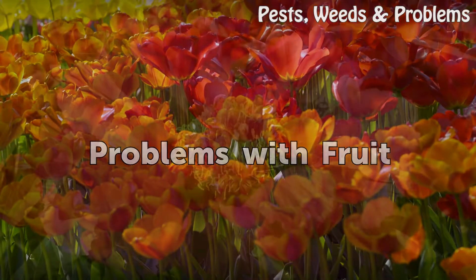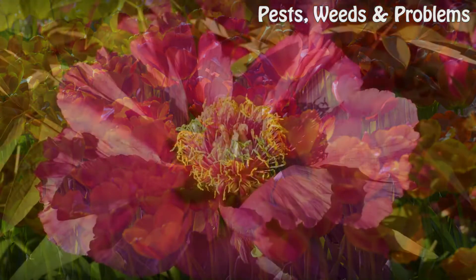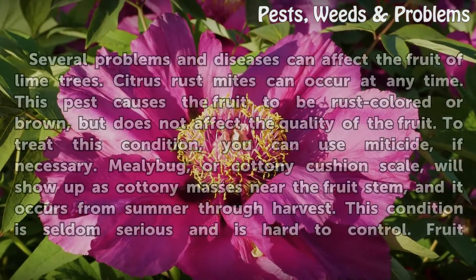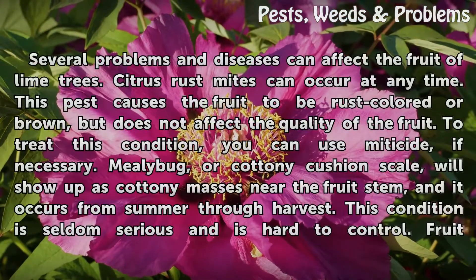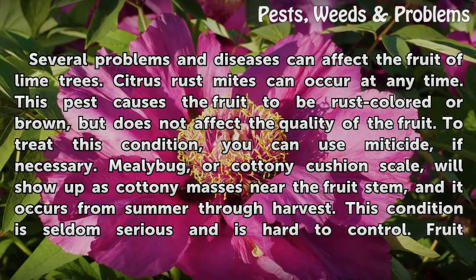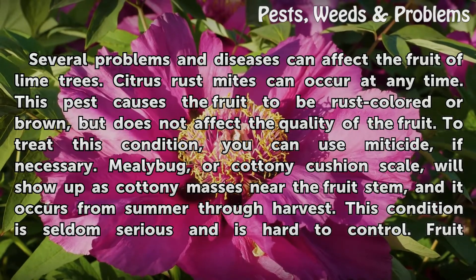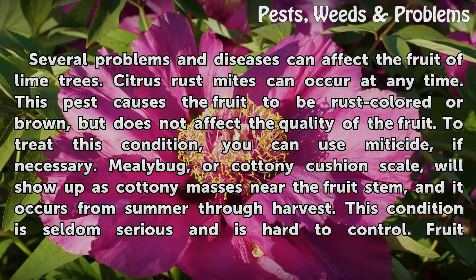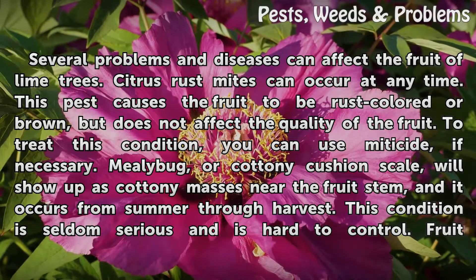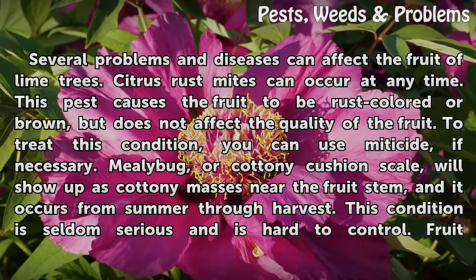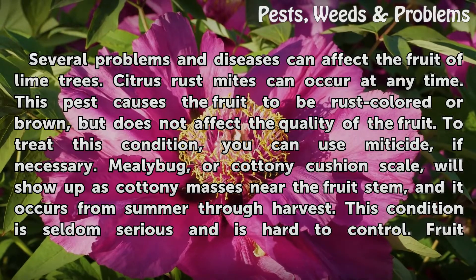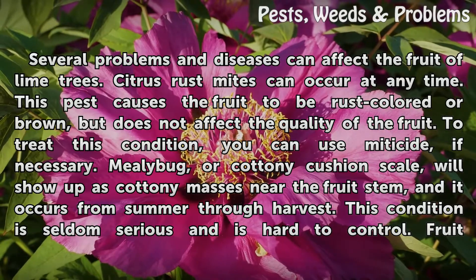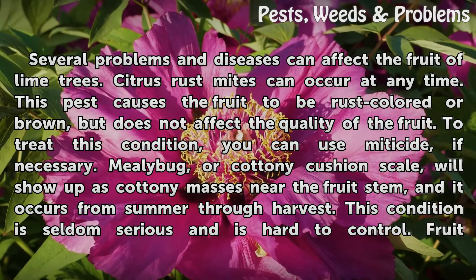Problems with Fruit. Several problems and diseases can affect the fruit of lime trees. Citrus rust mites can occur at any time. This pest causes the fruit to be rust-colored or brown, but does not affect the quality of the fruit. To treat this condition, you can use miticide if necessary.